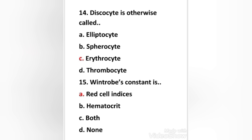Last question: Wintrobe's constant is red cell indices, hematocrit, both, or none? The right answer is option A: red cell indices. Wintrobe's constant is also known as red cell indices. If you like this video, please subscribe and share. Thank you.